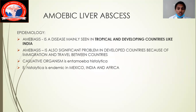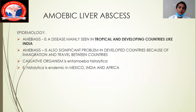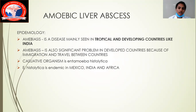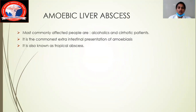The causative organism of amoebic liver abscess is always Entamoeba histolytica. Entamoeba histolytica is the causative organism mainly seen in amoebic liver abscess. It is endemic in Mexico, Africa, and India.